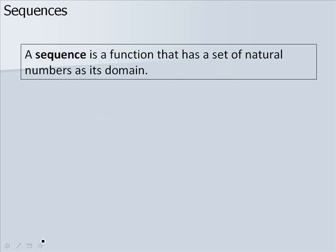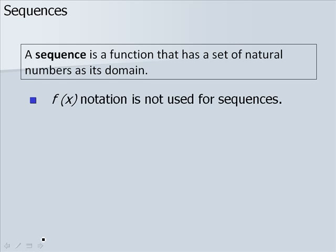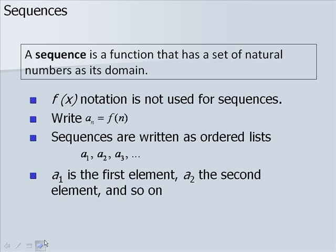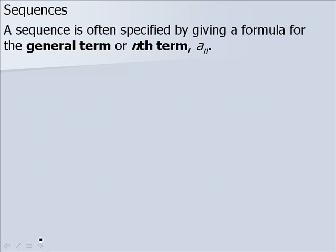A sequence is a function that has a set of natural numbers as its domain. f of x notation is not used for sequences; we write a sub n equals f of n instead. Sequences are written as ordered lists: a1, a2, a3, and so on, where a1 is the first element, a2 the second, and so on. A sequence is often specified by giving a formula for the general term or nth term, which we call a sub n.